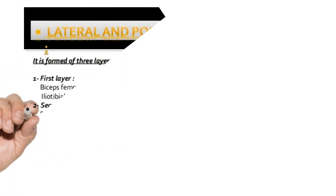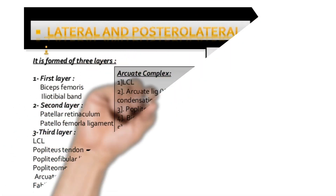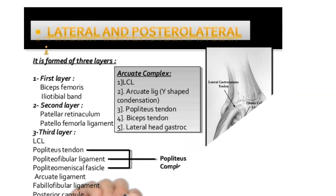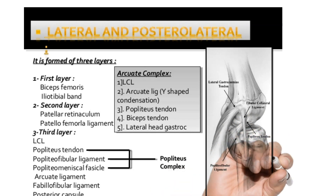Layer 2 consists of the patellar retinaculum and patellofemoral ligament. Layer 3 consists of the lateral collateral ligament, popliteus, and popliteofibular ligament. The LCL is in fact the most anterior structure on the fibular head. The LCL is also behind the center of rotation of the knee, meaning it is tight in extension and lax in flexion, so it is tested at 30 degrees of flexion with a varus thrust test.